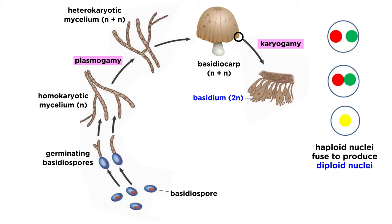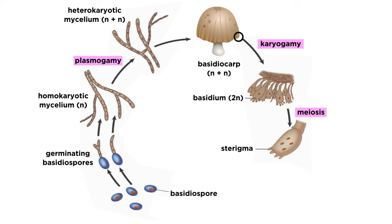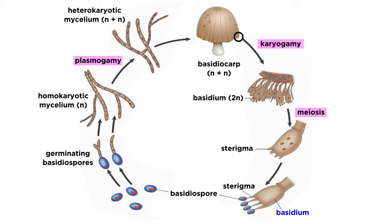This is the only period in mushroom reproduction that has a diploid stage. Immediately after forming this diploid nucleus, the cells undergo meiosis and form four haploid nuclei. These nuclei are then transferred to structures along the end of the cell, forming basidiospores. At this point, the cells have fully matured into basidia, the spore-bearing structures.